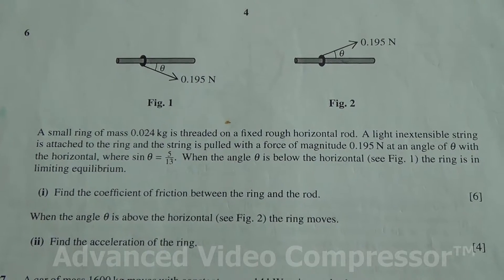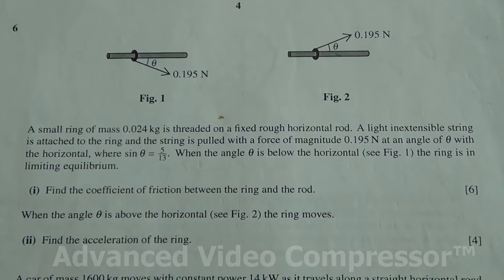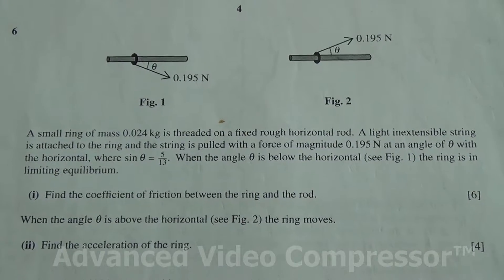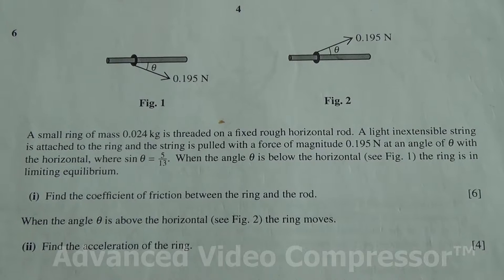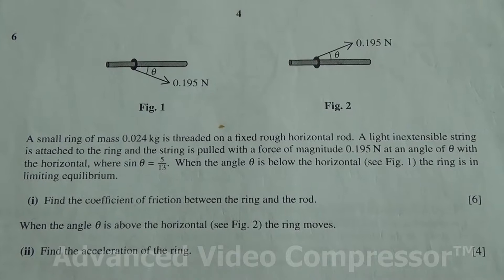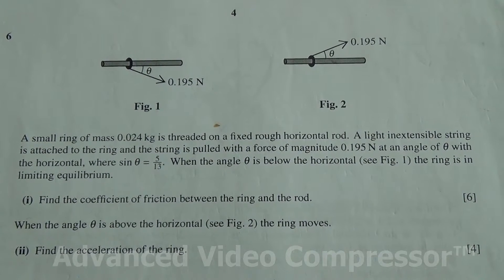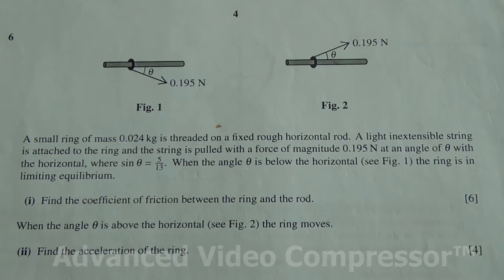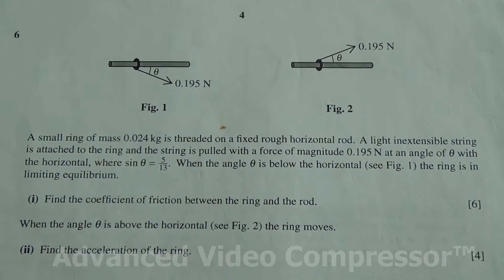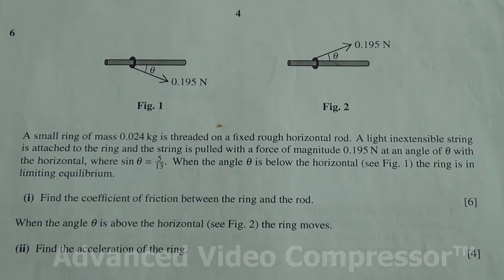A small ring of mass 0.024 kg is threaded on a fixed rough horizontal rod. A light, inextensible string is attached to the ring and the string is pulled with a force of magnitude 0.195 N at an angle of theta with the horizontal where sin theta is equal to 5 over 13. When the angle is below the horizontal, the ring is in limiting equilibrium in diagram 1.